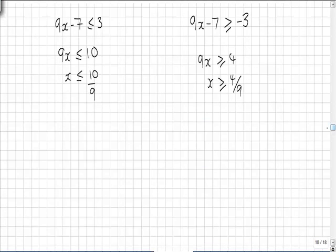And what we can see now is that these two inequalities actually could be joined. Given that x can be less than or equal to 10 over 9 and x can be greater than or equal to 4 over 9, we have a range of potential values for the solution to that inequality.